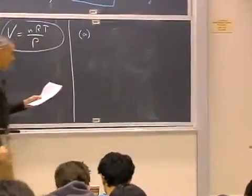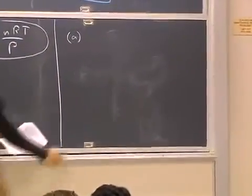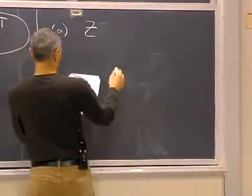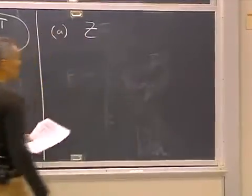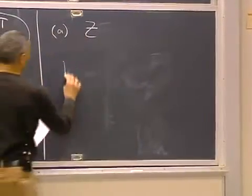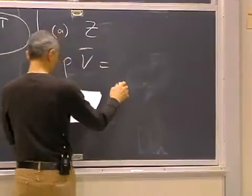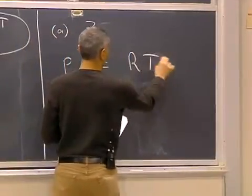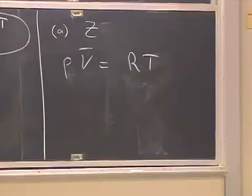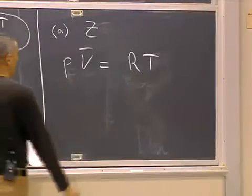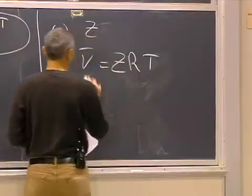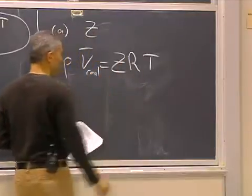The first one uses something called a compressibility factor, Z. And instead of writing PV equals RT, which would be the ideal gas law, we put a fudge factor in there. And the fudge factor is called Z.